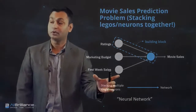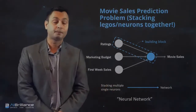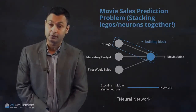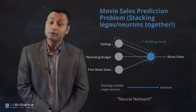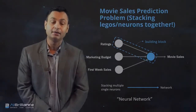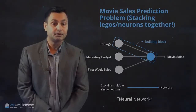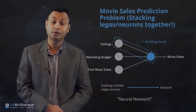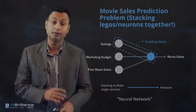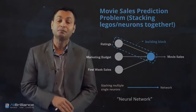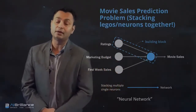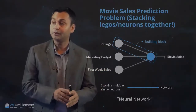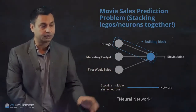We are stacking multiple single neurons, each correlating a single feature to the output. Another useful feature is first week sales: if first week sales are high, word of mouth spreads and that influences the final movie sales volume.